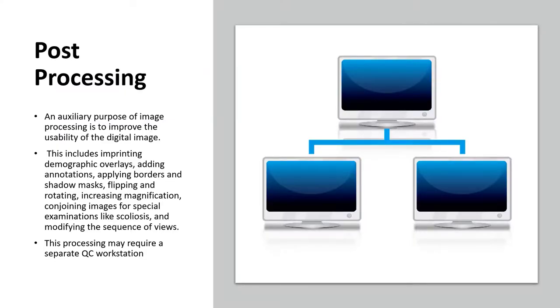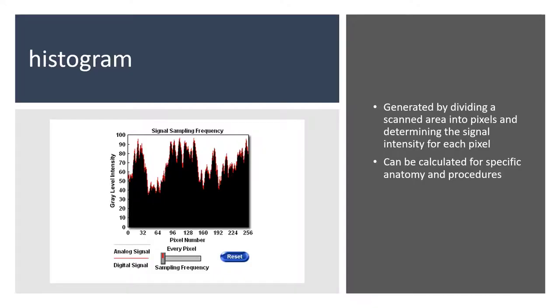Because we can choose the data we wish to display, we can post-process the images. Post-processing is filtering the image to get the information that we wish to see for that specific patient. Here we see a histogram with all of the information that is available. Notice that we can choose the number of pixels that we wish to see. So again, we are able to generate images that are specific to the patient and area of interest.